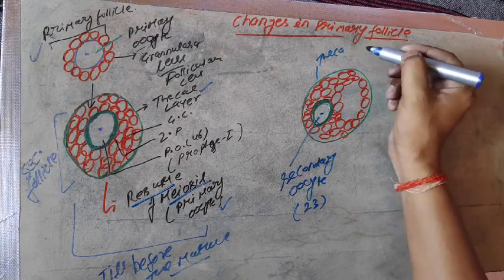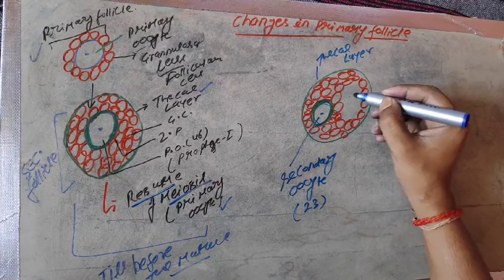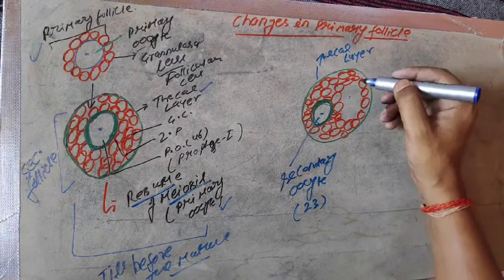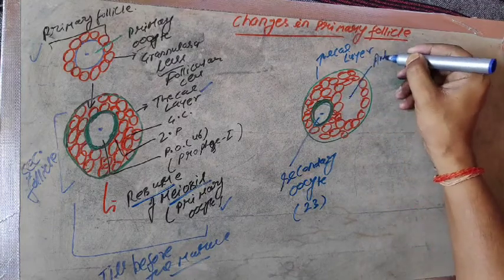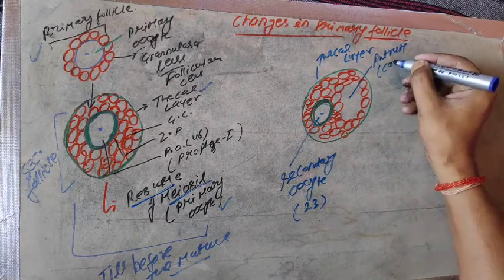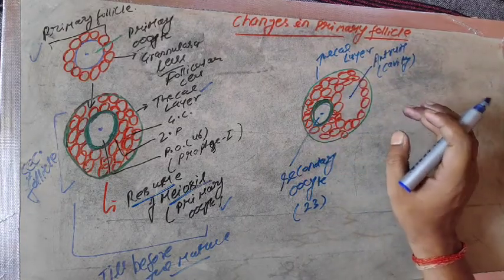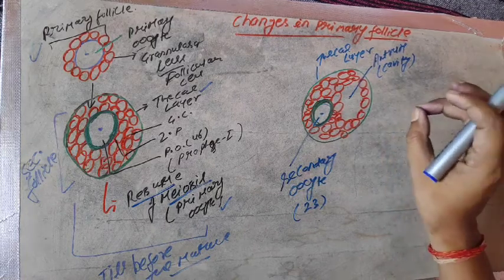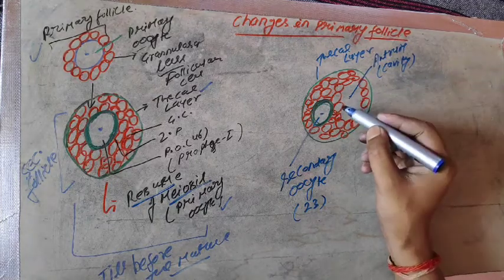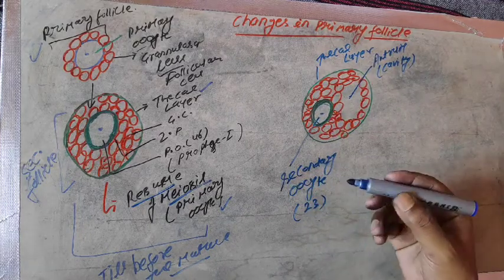When the secondary oocytes form, they shift towards the thecal layer, and then a gap forms. That gap is known as the antrum — a very important term. Antrum means the cavity inside the egg cells. The antrum consists of a lot of nutrients and nourishing materials that provide nourishment to the secondary oocytes in order to become mature.